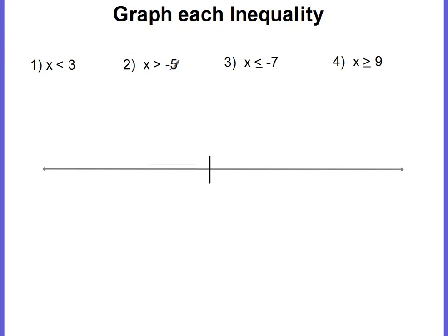Number 2: x is greater than negative 5. At negative 5, we're going to draw our circle. Are we going to fill it in? No — there is no equal line. This time the alligator is eating the x, so the x is going to be furthest to the right. Our line is going to go to the right. We label that x. And there is the graph for x is greater than negative 5.